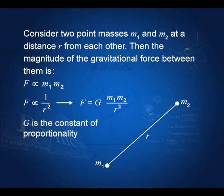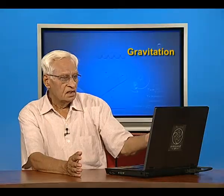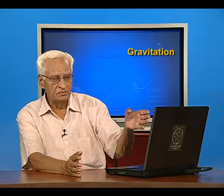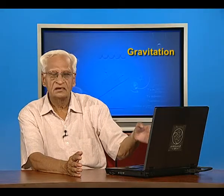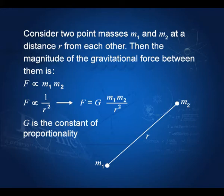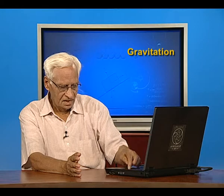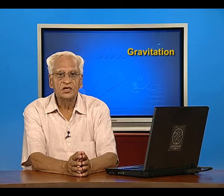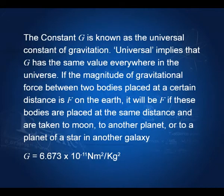Suppose we have mass m₁ and mass m₂ placed at a distance r, then the force between them can be written as m₁ times m₂ divided by r², multiplied by a constant G. G is known as the constant of proportionality — specifically, G is the universal constant of gravitation.